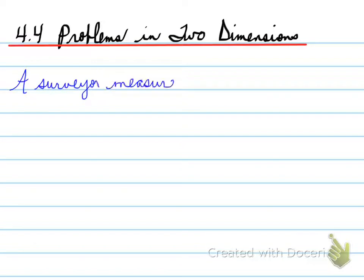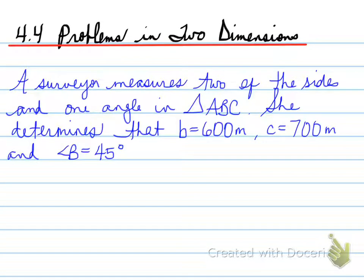Alright, 4.4, Problems in Two Dimensions. We're looking at an example where a surveyor measures two of the sides and one angle in a random triangle ABC. She determines that one of the sides is 600 meters, another side is 700 meters, and opposite the smaller side is an angle of 45 degrees.